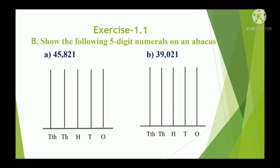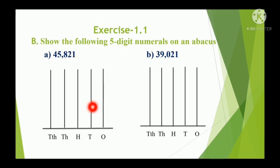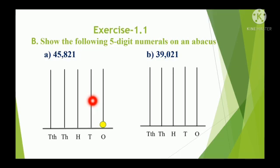Exercise 1.1b: Show the following 5-digit numerals on an abacus. Example: 45,821. We have to represent this number on the abacus. In the 1s place, the digit is 1, so draw 1 bead. In the 10s place, it is 2, so draw 2 beads. In the 100s place, it is 8, so draw 8 beads: 1, 2, 3, 4, 5, 6, 7, 8.